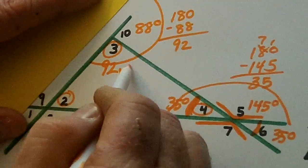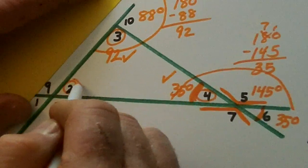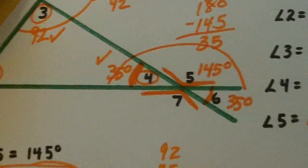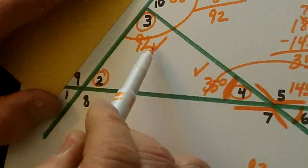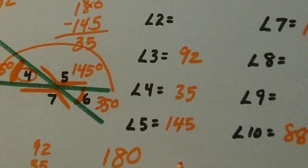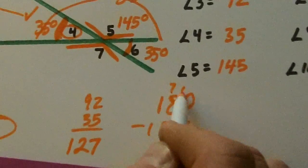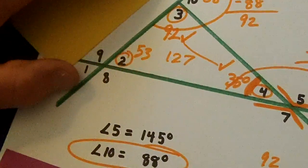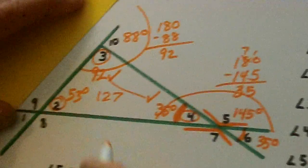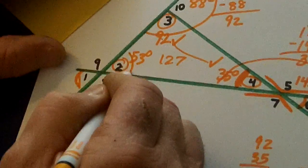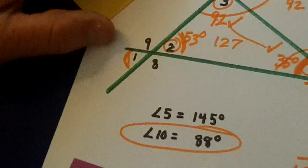These three inside angles are 92, 35, and this one. So let's add 92 and 35. 127. Now these two add up to 127. So we need to take 180 minus 127. When we borrow, we get 53. So number two is 53. Now watch this. Number one is vertical to two. So one is 53 degrees.